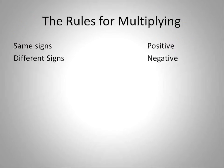The rules for multiplying are actually the easiest of all the rules to remember. It's this basic: if it's the same signs, then the answer is going to be positive. If there are different signs, the answer is going to be negative.